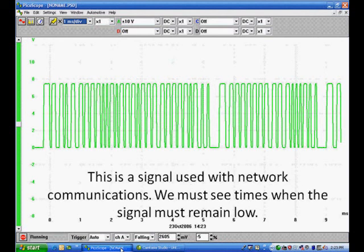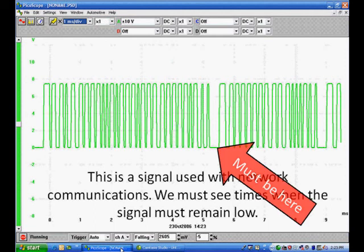Now, we're looking at a communication signal. This is a signal used with network communications. We must see times when the signal remains low on this particular communications protocol. This signal must be here, must be followed by a longer high pulse. Those two pulses are very critical for the communications to work. The network would stop communicating if this long, low pulse is not here. If it's missing, communications will be down, hook your scan tool up, hook whatever, no communications, you ping with your scan tool, unable to ping, status is, it's not working, it's off. None of those tell you that this pulse is missing.